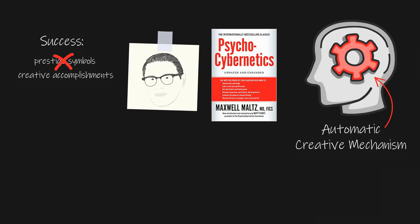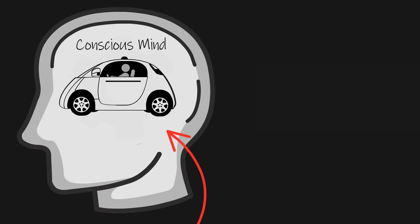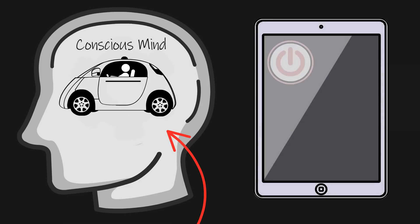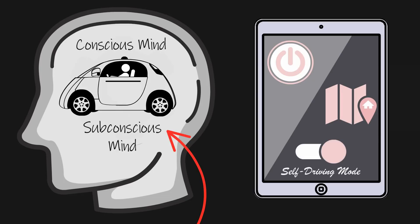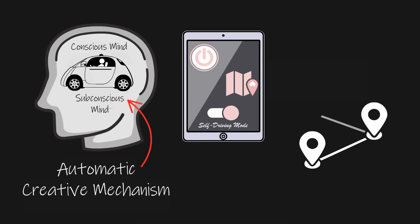You can think of your automatic creative mechanism like an internal self-driving car. Your conscious mind is the operator who initiates action by starting the car and defines a clear goal by inputting a destination. The car itself is your subconscious mind which accepts your goal and delivers you to the destination without much effort on your part.